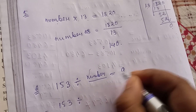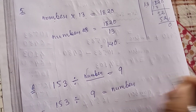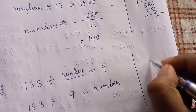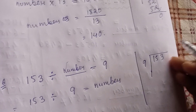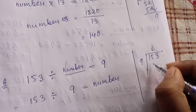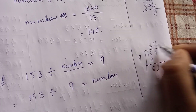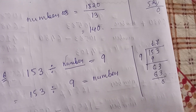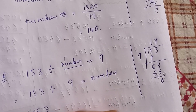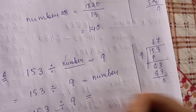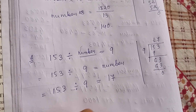Simply swap the position of 9 with the unknown number, then divide: 153 divided by 9. 9 times 1 is 9, 9 times 7 is 63 — so 153 divided by 9 equals 17. That means the divisor is 17.